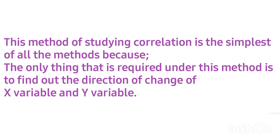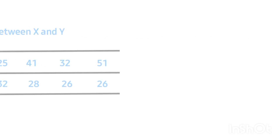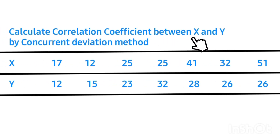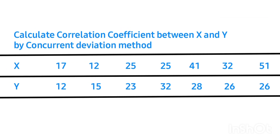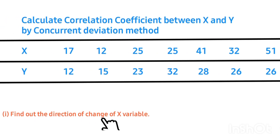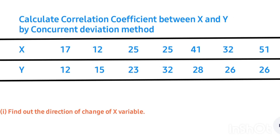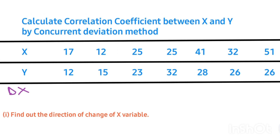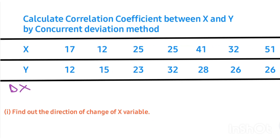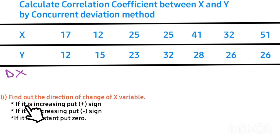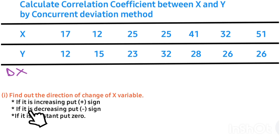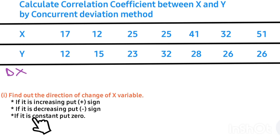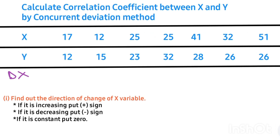Without wasting much time, let's take a look at the problem on the board. The problem says: calculate the correlation coefficient between X and Y by the concurrent deviation method. There are various steps involved. Step one says: find out the direction of change of the X variable, denoted as Dx. The rules are: if the direction of change is increasing, put a plus sign; if it is decreasing, put a minus sign; if the direction of change is constant, put zero.